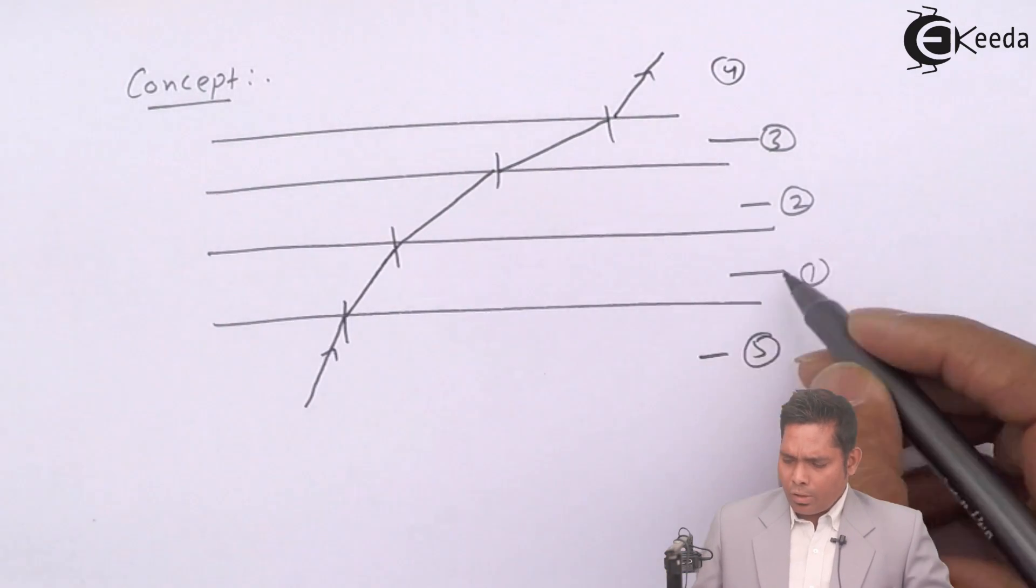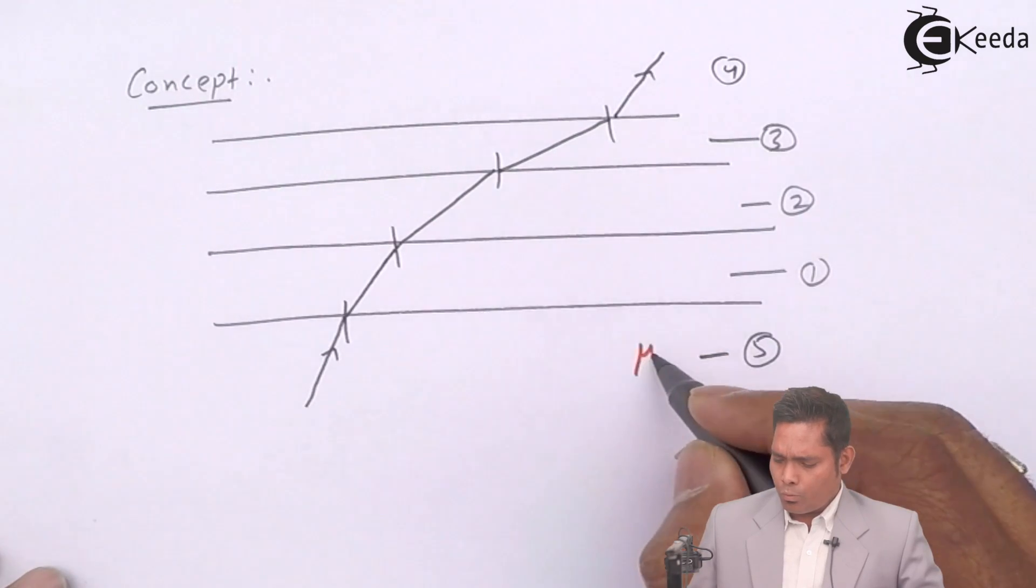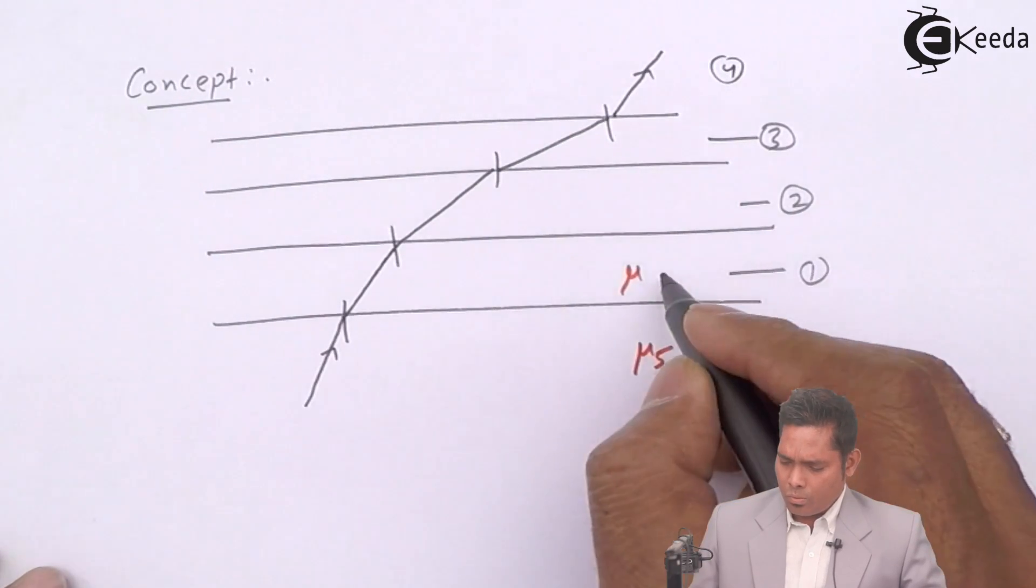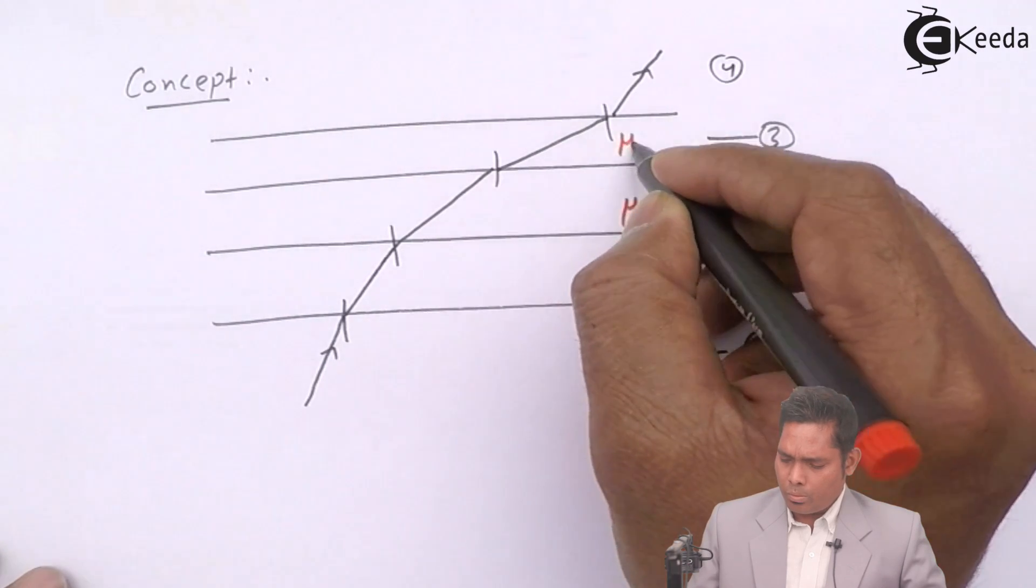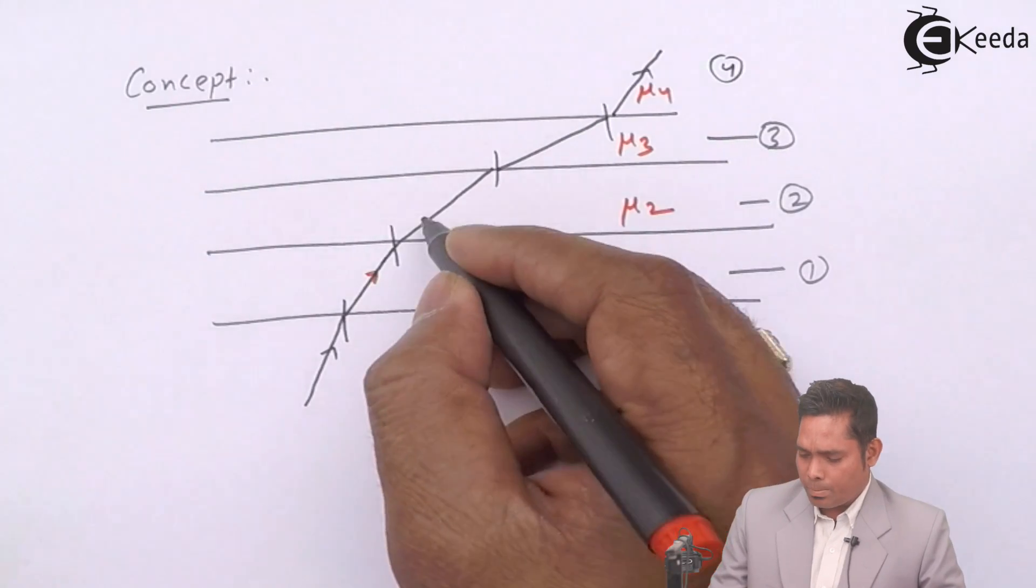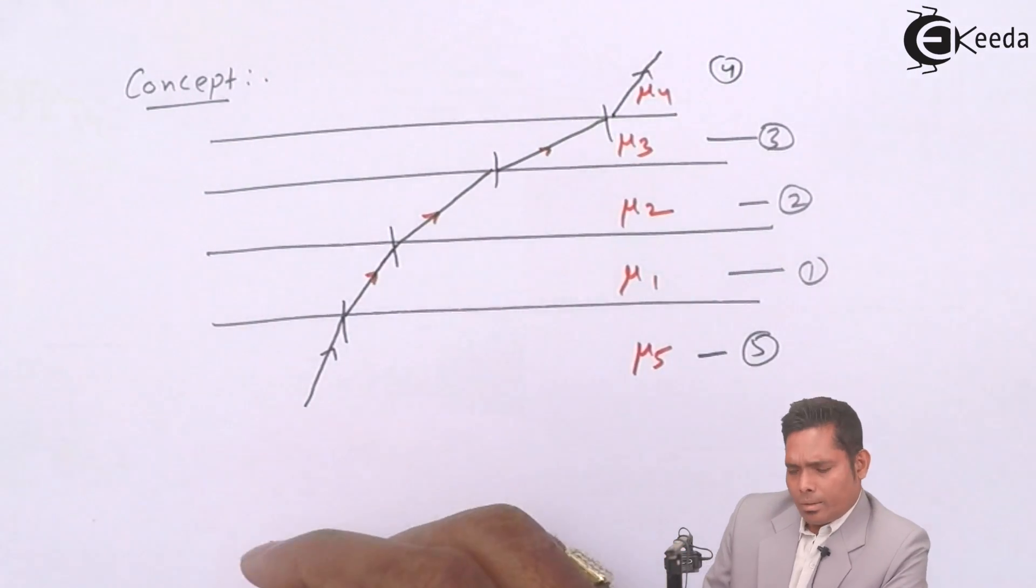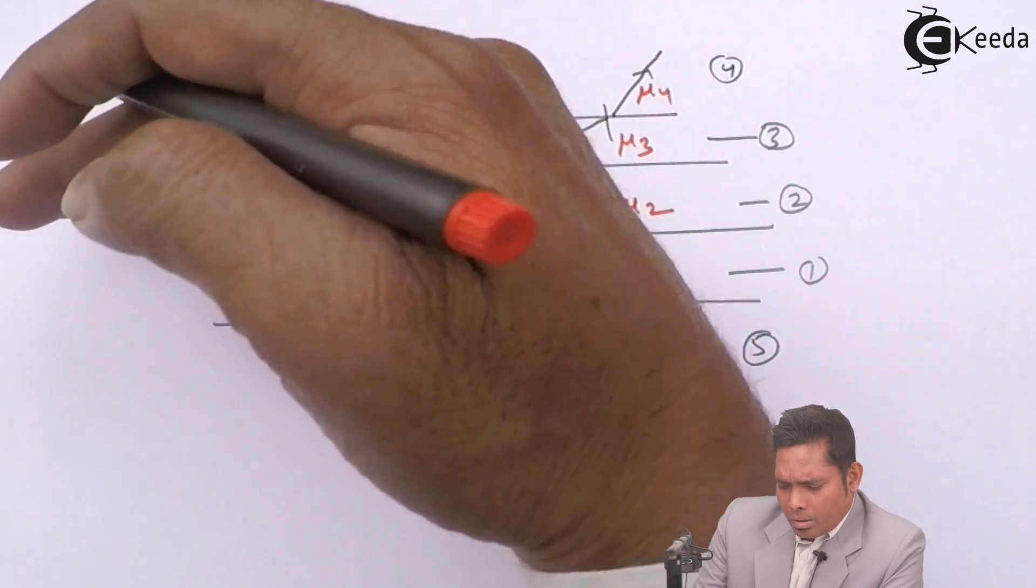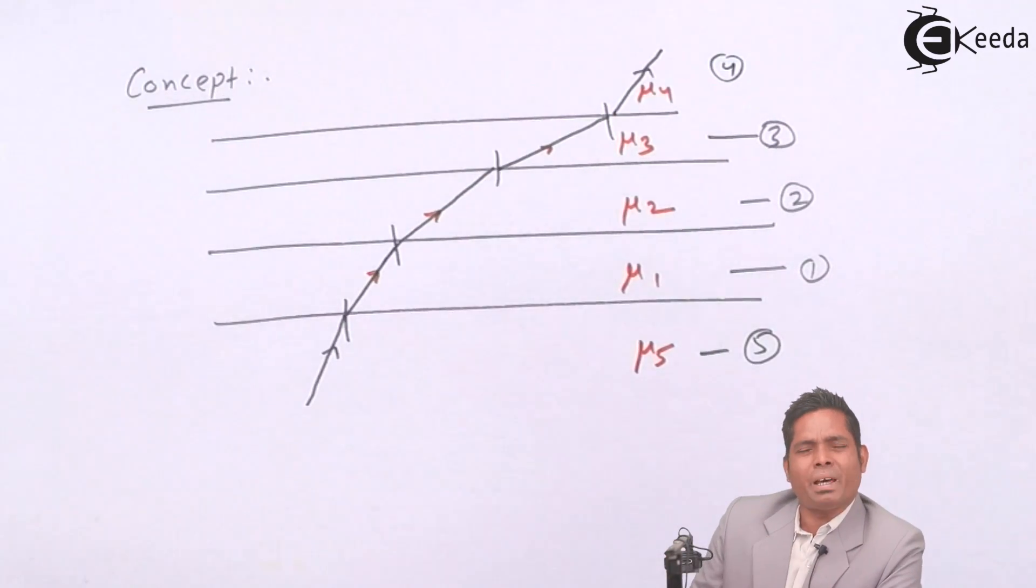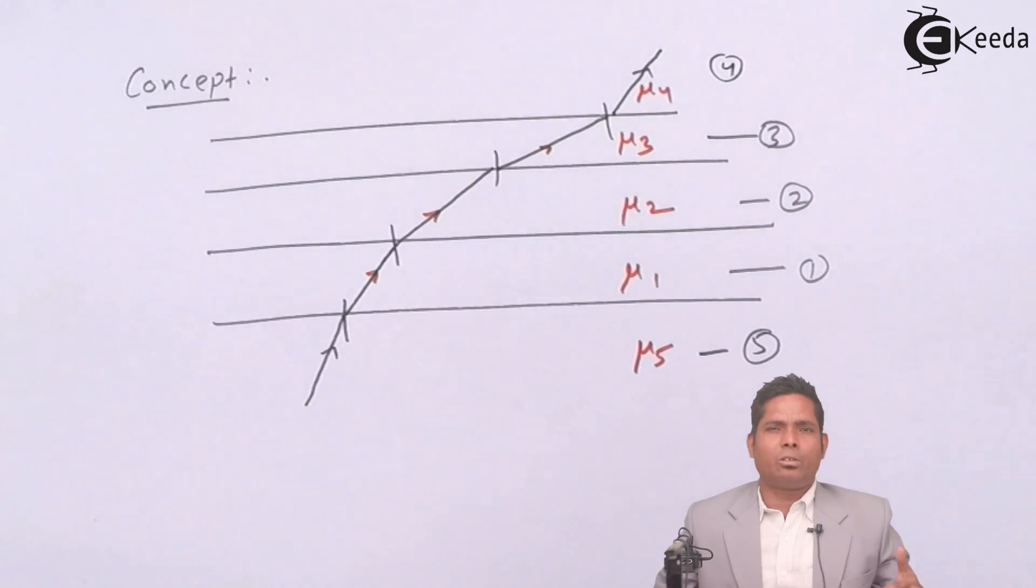Then, if the refractive indexes of each medium is μ₅ here, μ₁, μ₂, μ₃, μ₄, like so, and the light follows this path, then if the media are placed parallel to each other, this is applicable when the medium layers are parallel to each other.